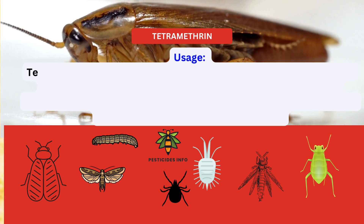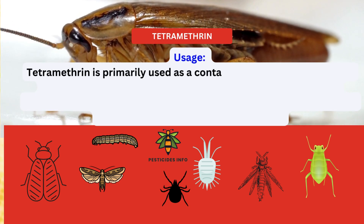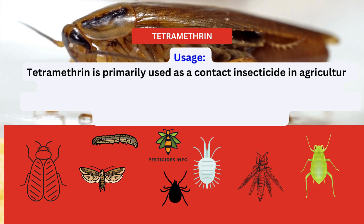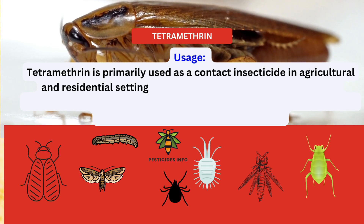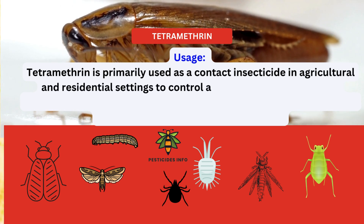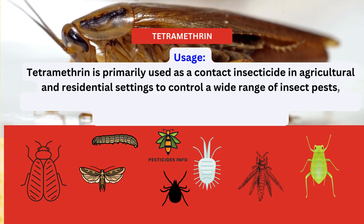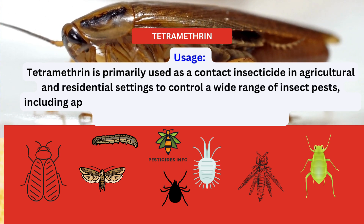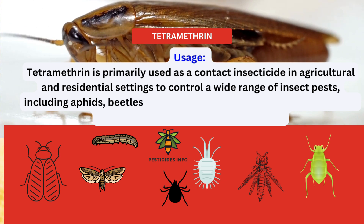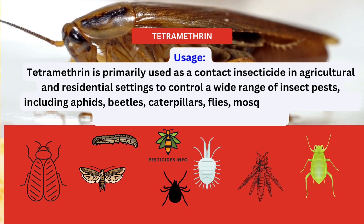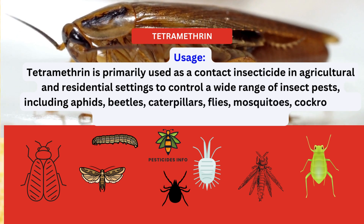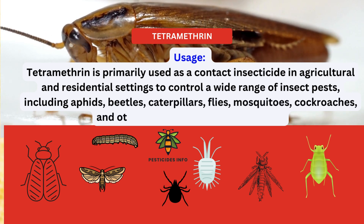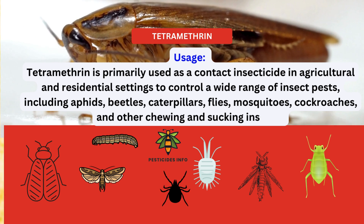Uses in agriculture. Tetramethrin is primarily used as a contact insecticide in agricultural and residential settings to control a wide range of insect pests, including aphids, beetles, caterpillars, flies, mosquitoes, cockroaches, and other chewing and sucking insects.